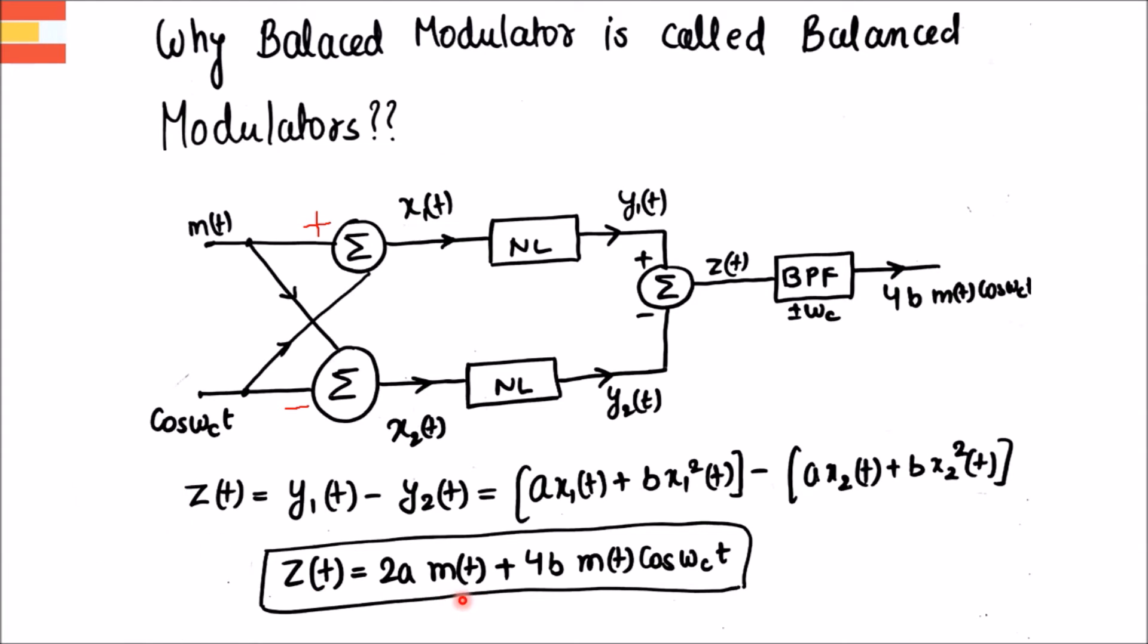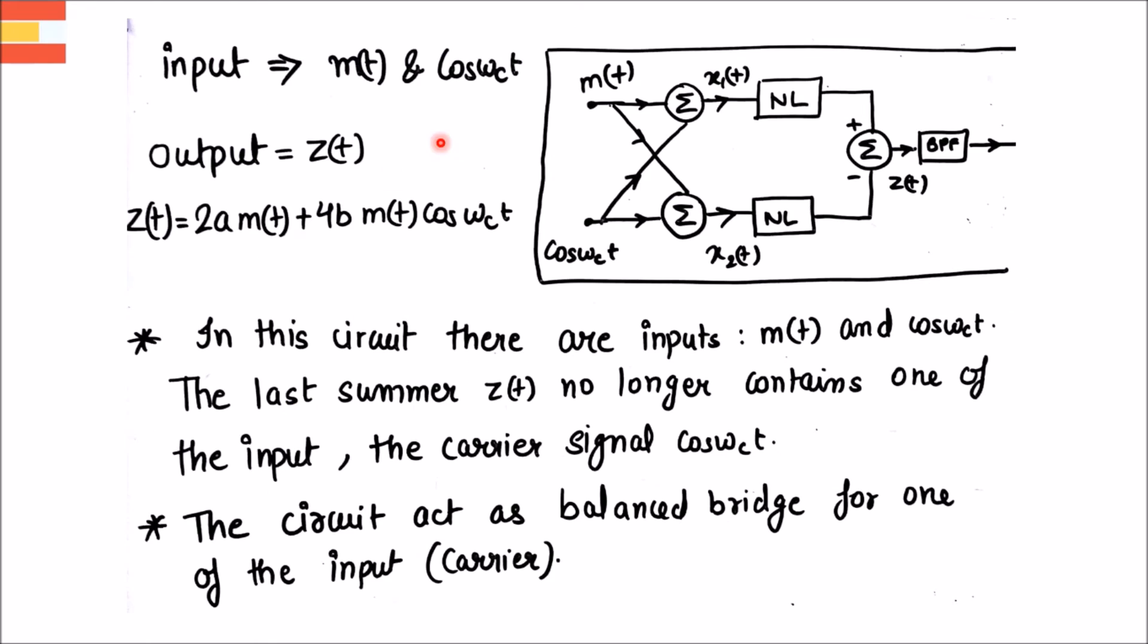Let's draw some important conclusions on this mathematical derivation. We have given input as m(t) and cos ωc(t) but at output we are getting m(t) alone. Cos ωc(t) lost its identity at the output. So in this circuit there are inputs m(t) and cos ωc(t). The last summer z(t) no longer contains one of the input, the carrier signal ωc(t).